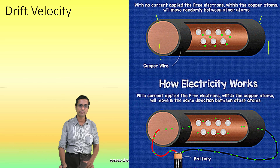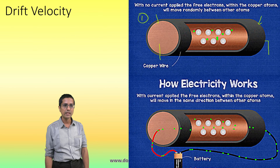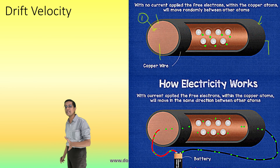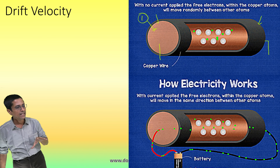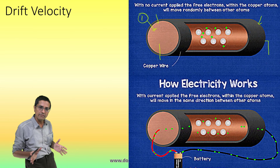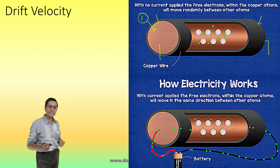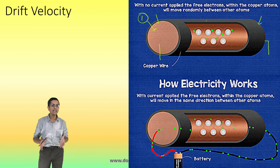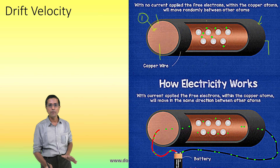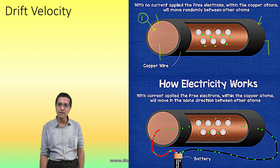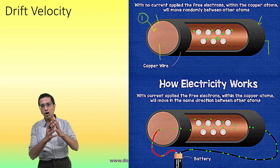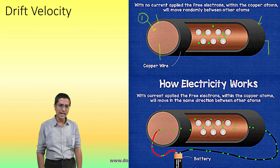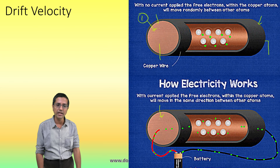Even without the presence of an electric field — as shown in the first diagram — these free electrons are not stationary. They are moving at a velocity known as the Fermi velocity. However, if we add the velocities of all the various electrons inside the conductor, the net result is zero, because these Fermi velocities are completely random.